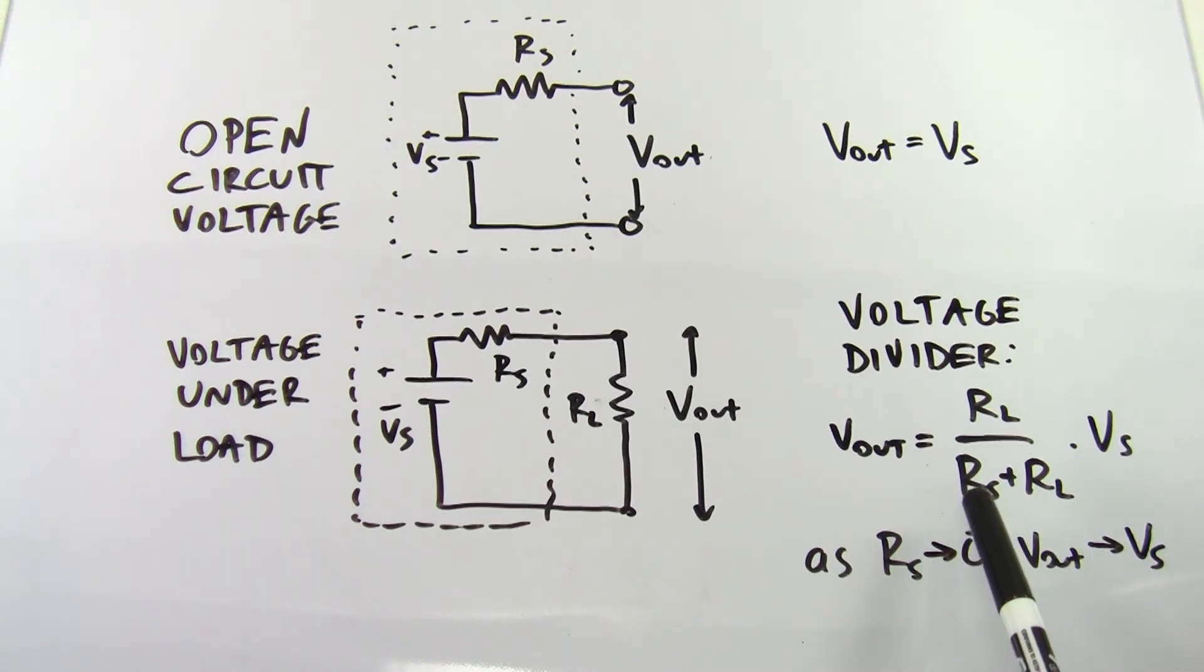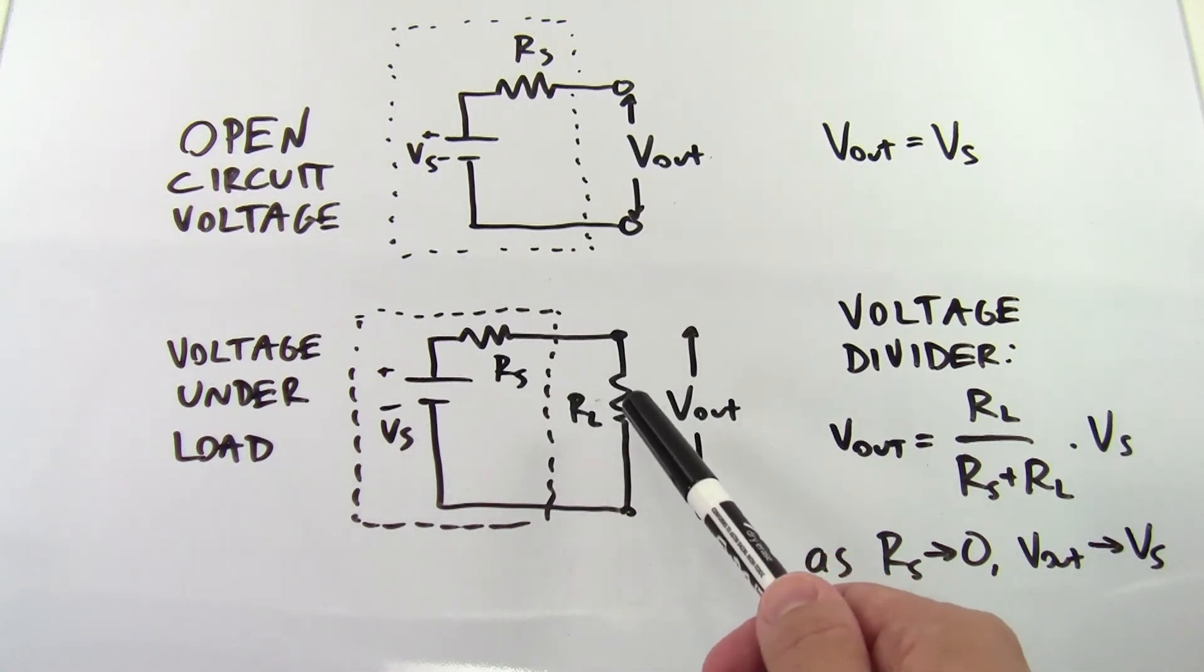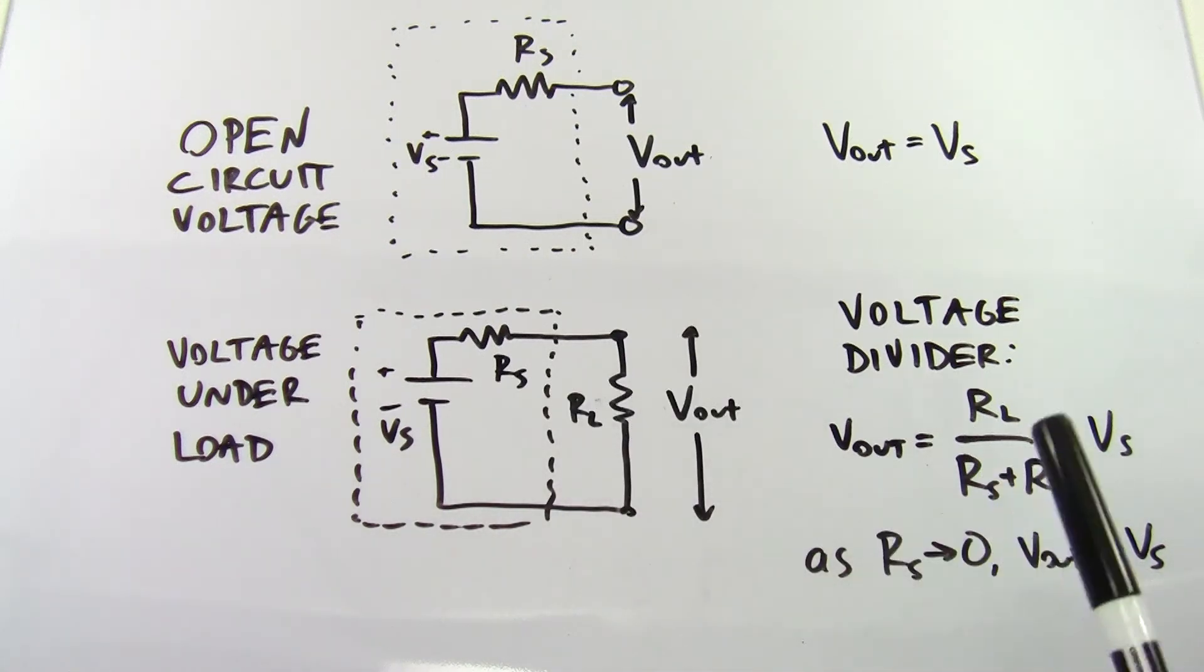This means that ideally you want your internal resistance to be as small as possible for a battery, so you aren't losing much of your voltage to the internal resistance of the battery, and you're getting as much of the voltage as possible delivered to the load.